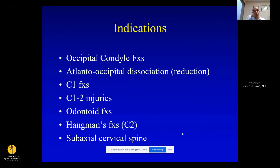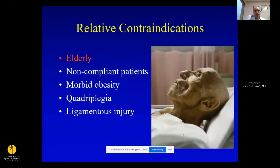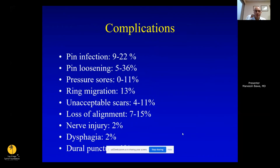Good indications for halos include occipital condyle fractures, temporizing OC1 injuries, C1-C2 fractures including odontoid fractures, and hangman's fractures. Subaxial cervical spine injuries are not a great indication. Relative contraindications include elderly patients, obese patients who can't fit into a halo, and patients with neurologic injury who won't tolerate it. Complications include pin site infections, loosening, and halo migration. Check pins every couple of weeks and ensure the fracture remains stable.